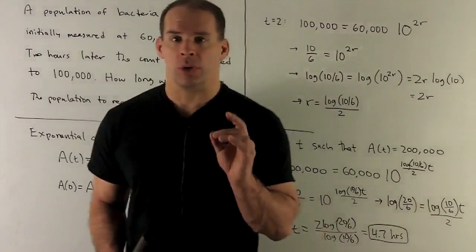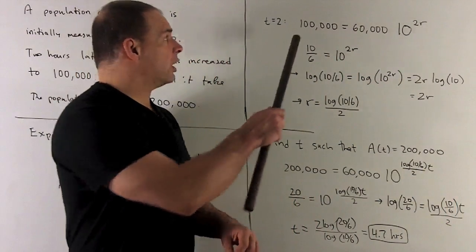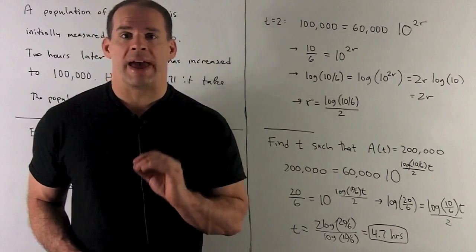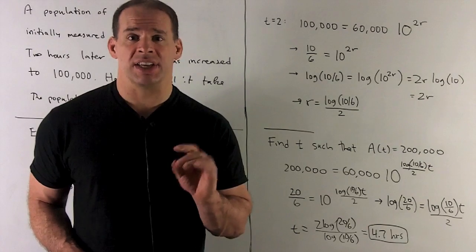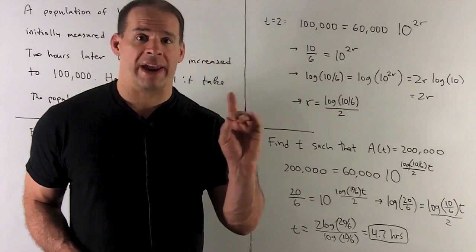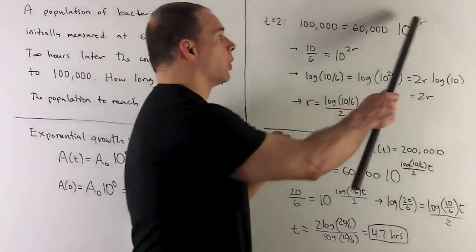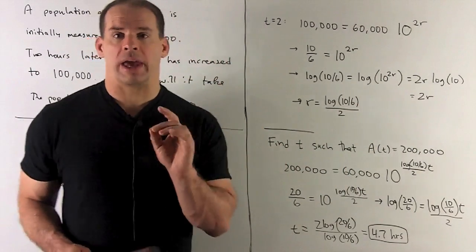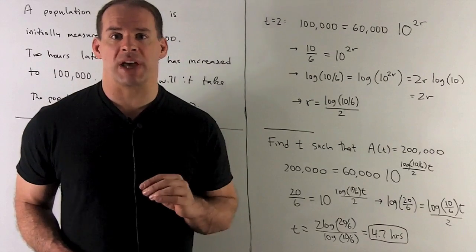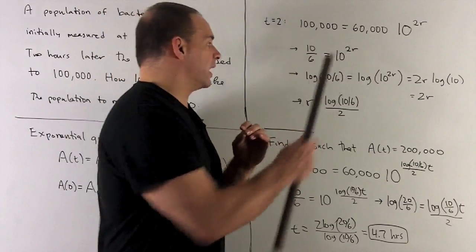We go to time t equal to 2 hours, we're going to have 100,000. So we put that up against the formula. The formula says 60,000 times 10 raised to our rate r times 2 hours, so we'll have a 2r. We isolate our 10 to the 2r, so divide both sides by 60,000 gives me 10 over 6.